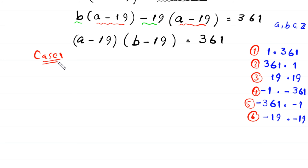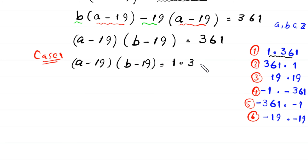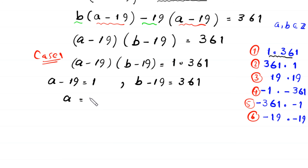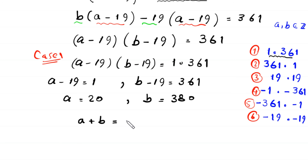First we solve case 1. We write (a minus 19) times (b minus 19) equal to 1 times 361. So a minus 19 equals 1 and b minus 19 equals 361. From the first equation we get a equals 20, and from the second we get b equals 380. So the value of a plus b is equal to 20 plus 380, which equals 400.